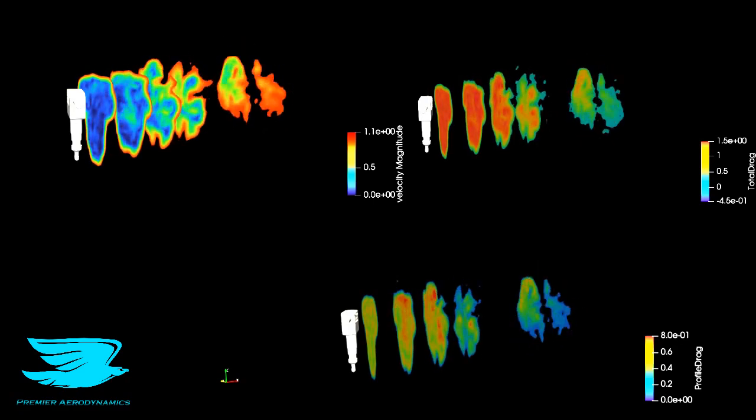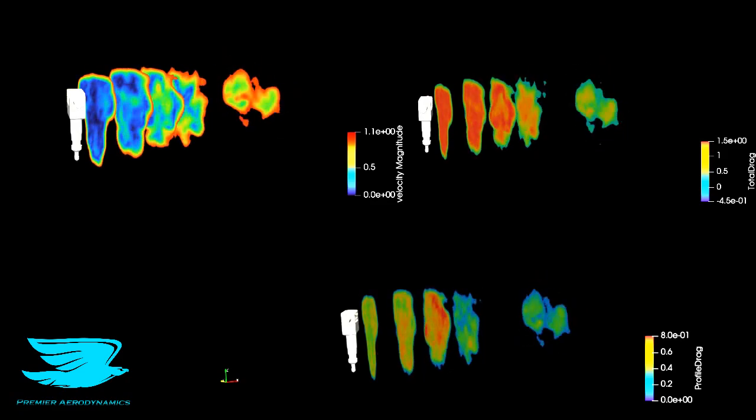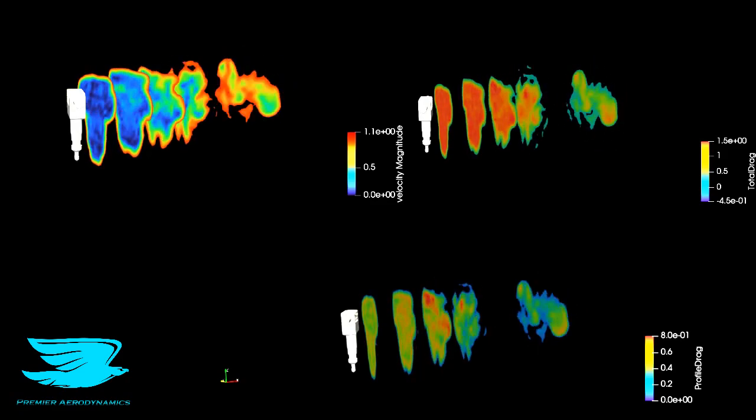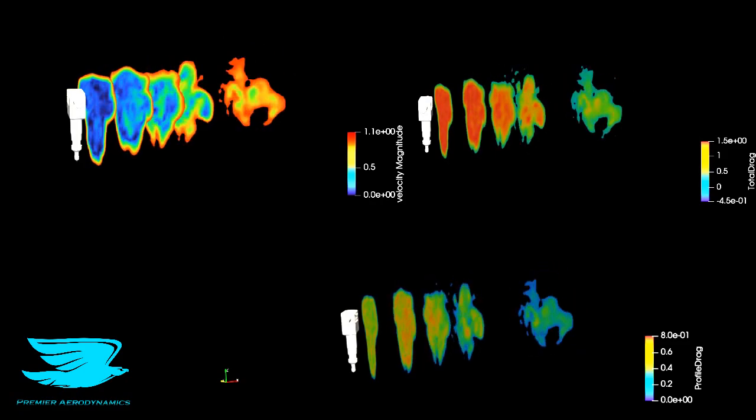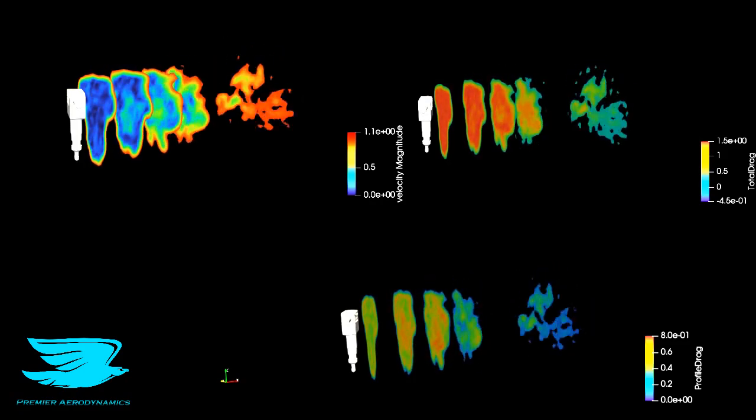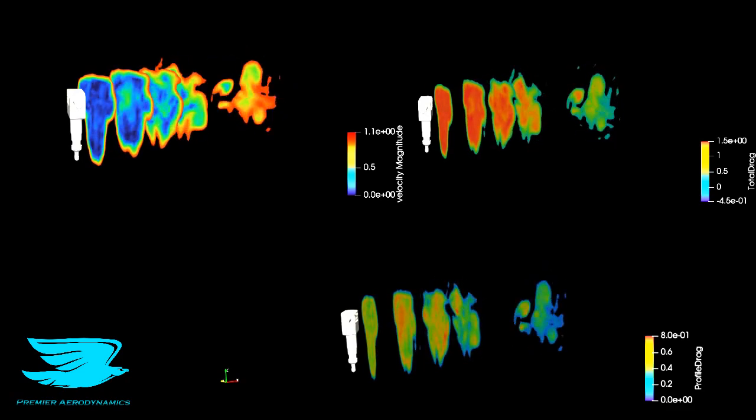Here we have the aerodynamics of the jackhammer. On the top left is the velocity magnitude showing the wake. The top right is the total drag and sub drag, and the bottom is the profile drag. Generally speaking, the wake follows the shape of the jackhammer quite nicely.